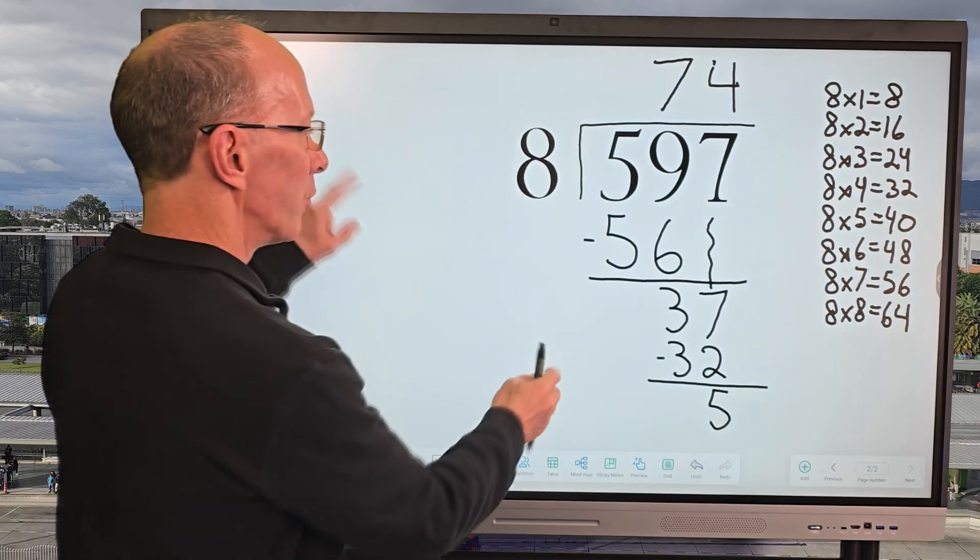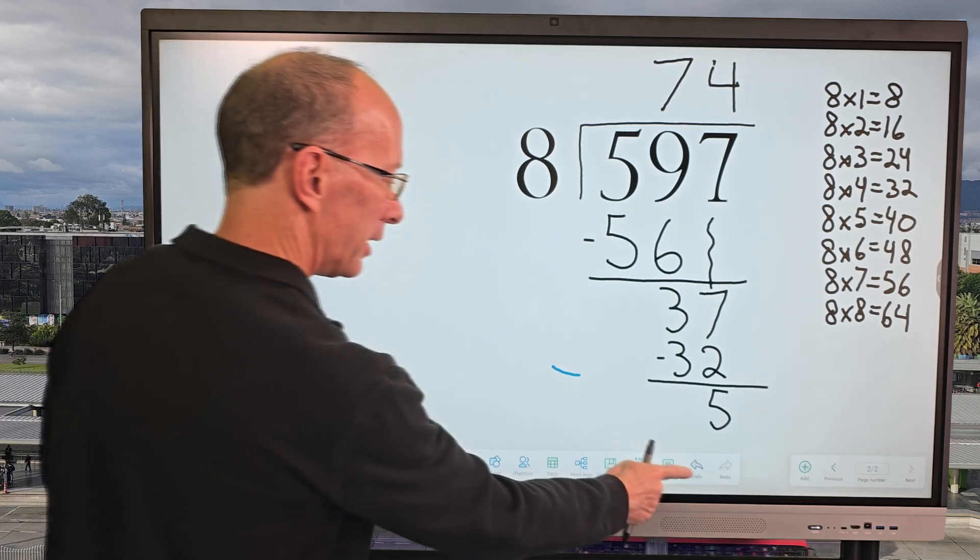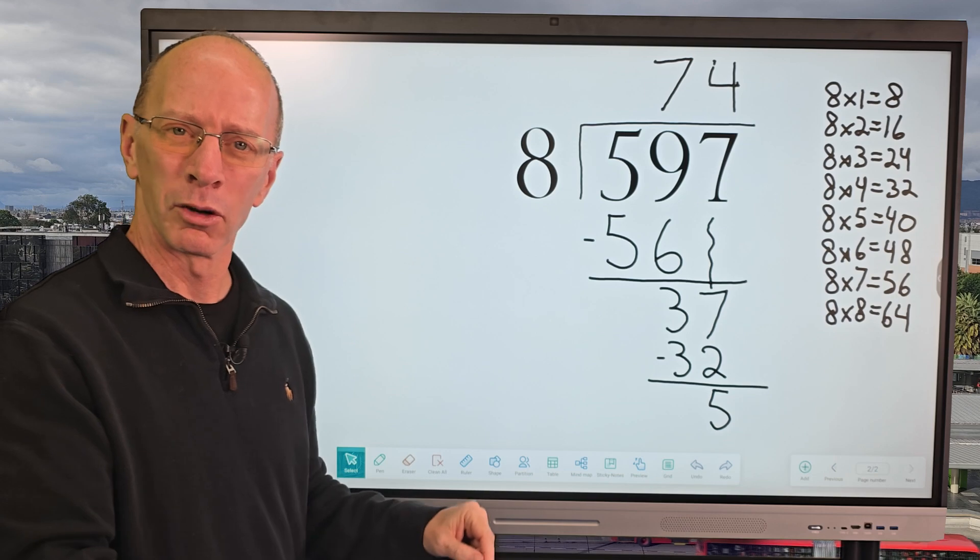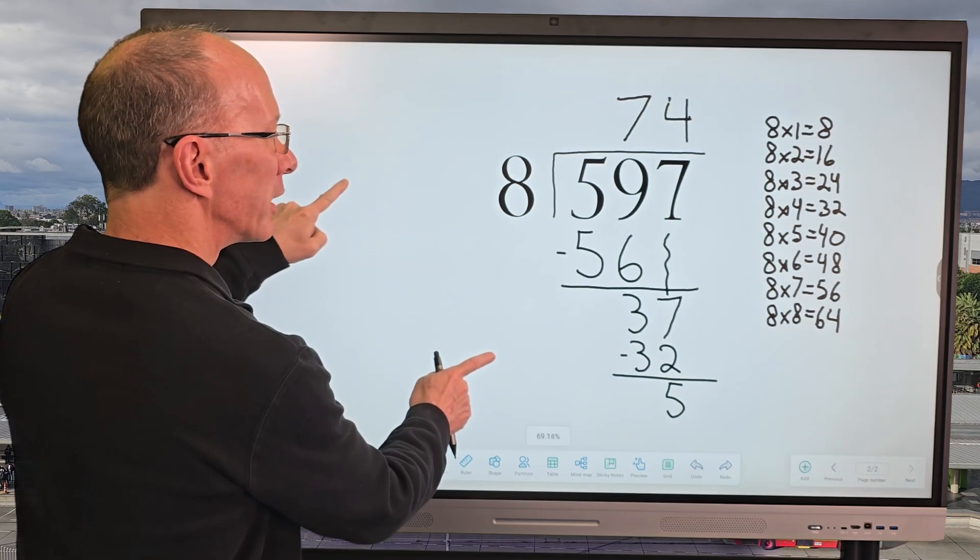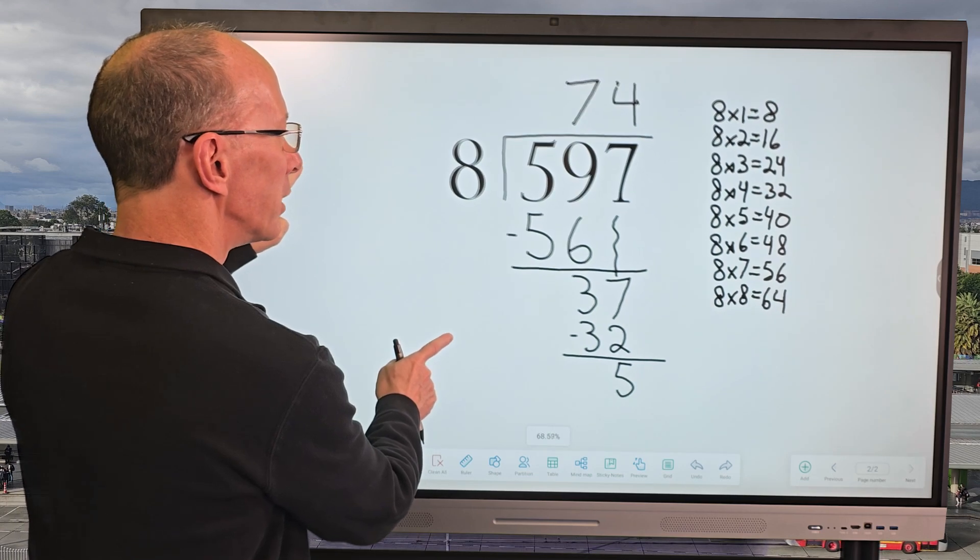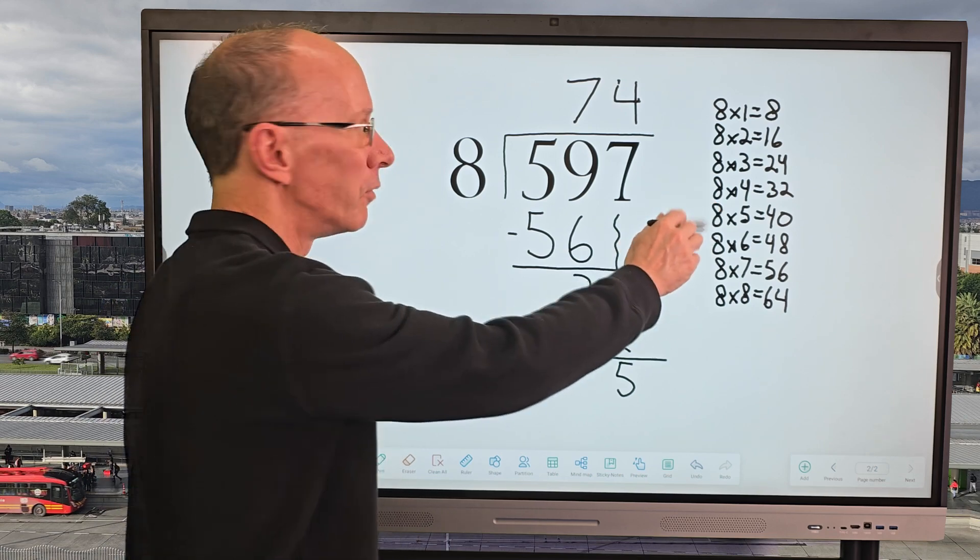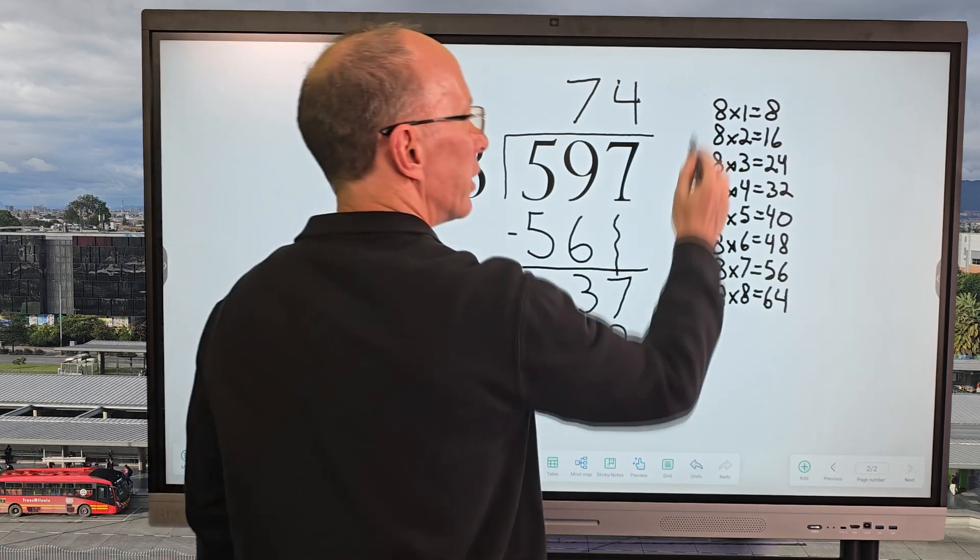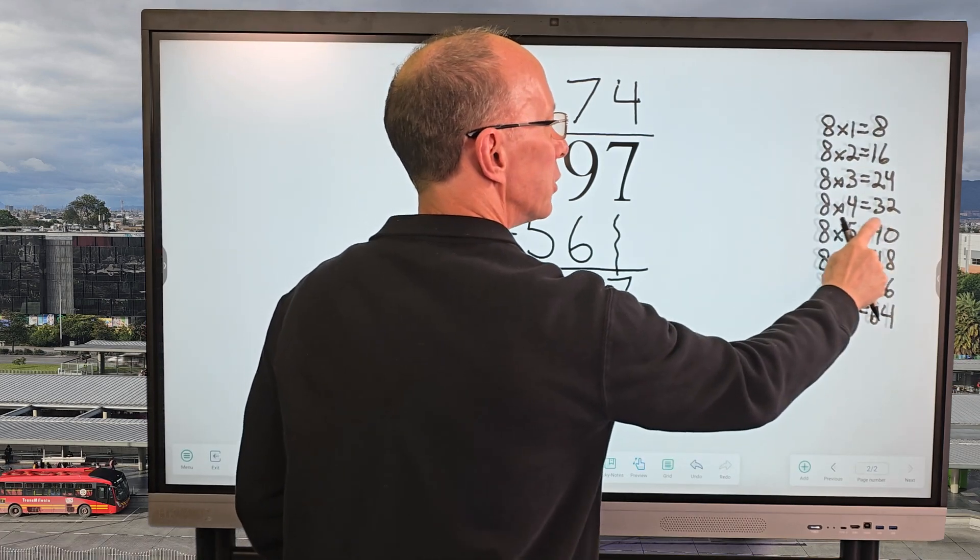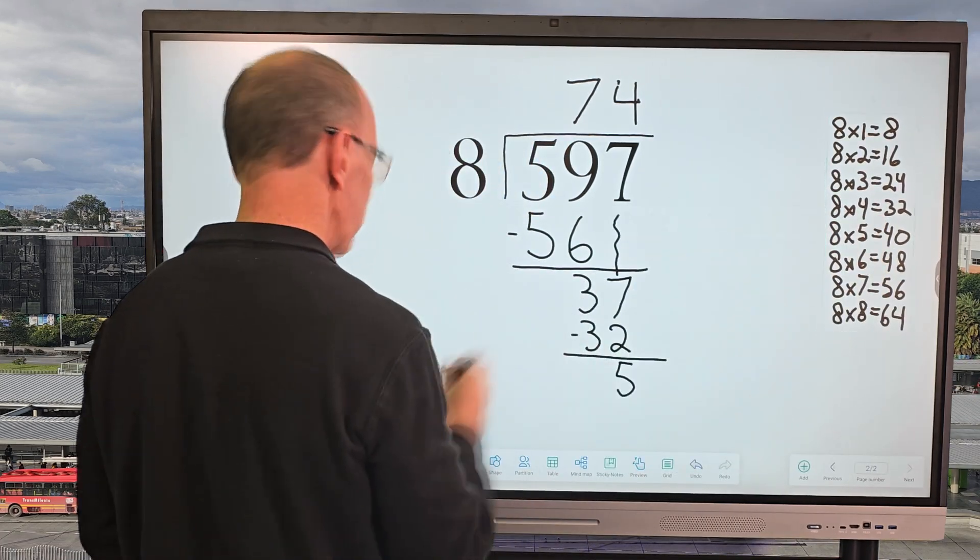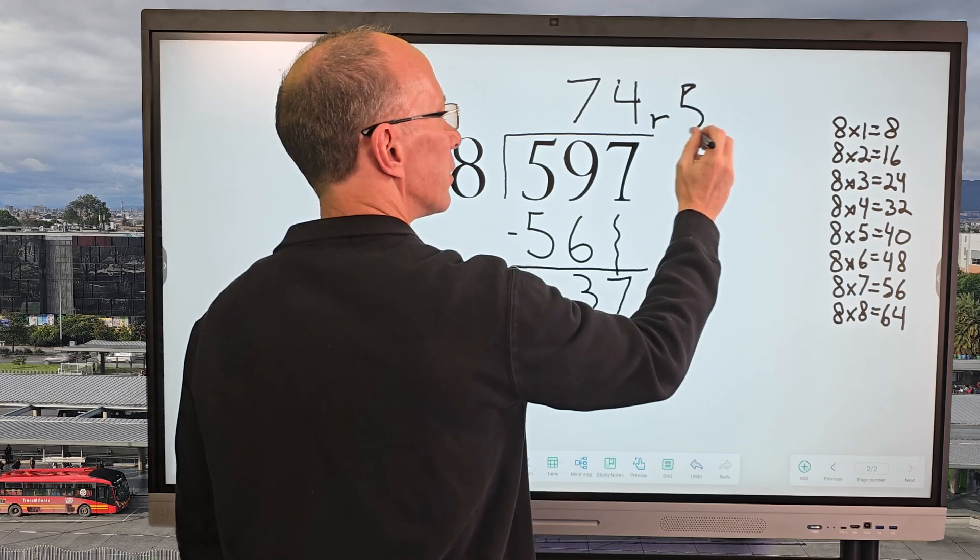This would be our remainder. I'm going to bring the... Whoops. Let me do a... Sometimes I'm making a little boo-boos along the way, but that's all right. We're going to fix it. I'm going to bring the board over here just a little bit. So this would be our remainder. We would... I'm going to go ahead and move this right here. So if you're working with remainders, you're going to put it right here, a remainder of 5. All right.